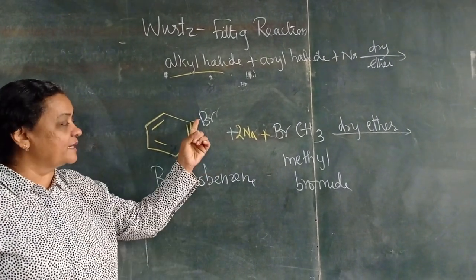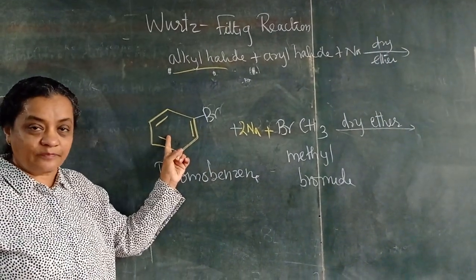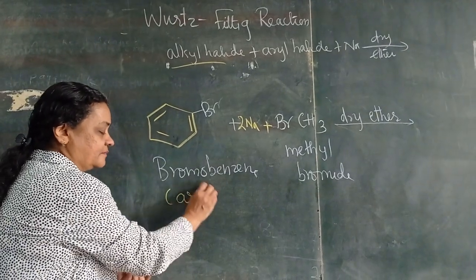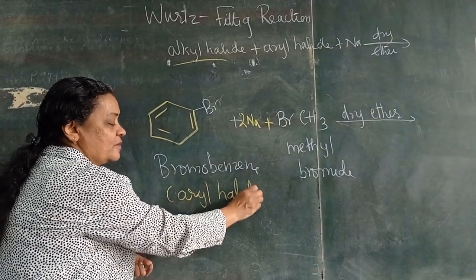Bromobenzene. Bromine directly attached to aromatic ring. So it is aryl halide, this is aryl halide, bromobenzene.